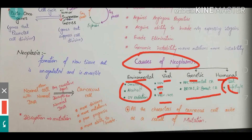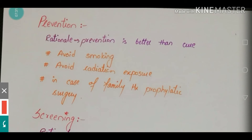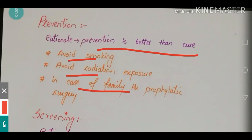Diet and hormonal factors are also responsible for causing carcinoma. All characteristics of a cancerous cell arise as a result of mutation — mutation is the key point on which the whole study of carcinoma is based. The rationale behind prevention is that prevention is better than cure; by avoiding smoking and radiation exposure we can avoid carcinoma. In cases of family history, prophylactic surgery will ideally be needed to prevent carcinoma.